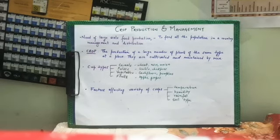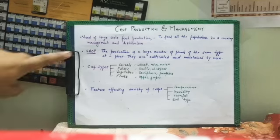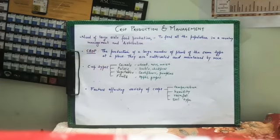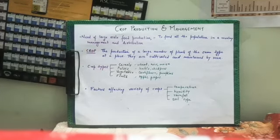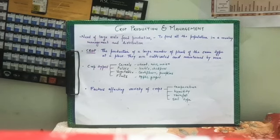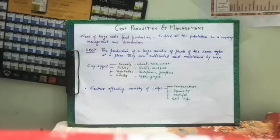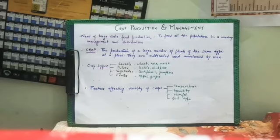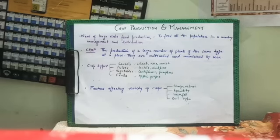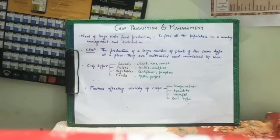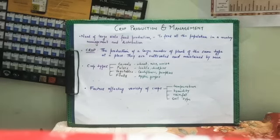Now let's first see what is the definition of crop. A crop is the production of a large number of plants of the same type at a place. They are cultivated and maintained by people, such as croplands and fields, or vineyards for fruits like grapes. These areas where the same type of crop, fruit, or vegetable is grown are called croplands, and the whole number of plants collectively is called the crop.